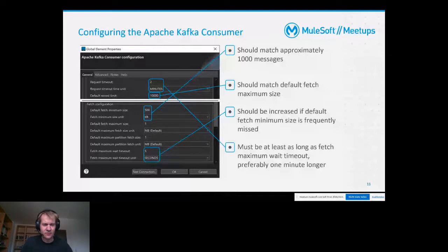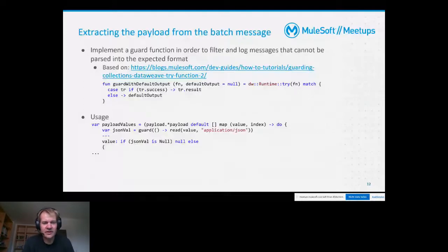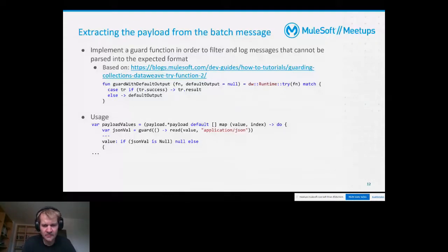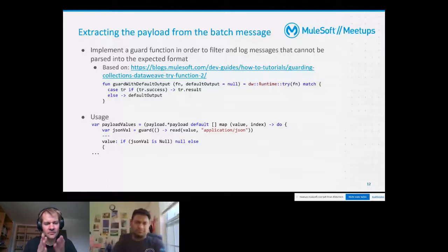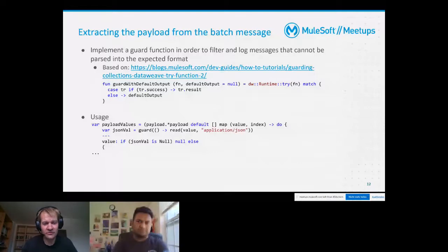Now let's get to another detail: extracting the payload from the batch message. You have to be aware that the payload arrives in a more specific and more difficult-to-traverse format than when you use the single message listener. In that case, when there is some kind of issue when transforming or traversing your data, your data path will blow up and the whole API processing will abort.